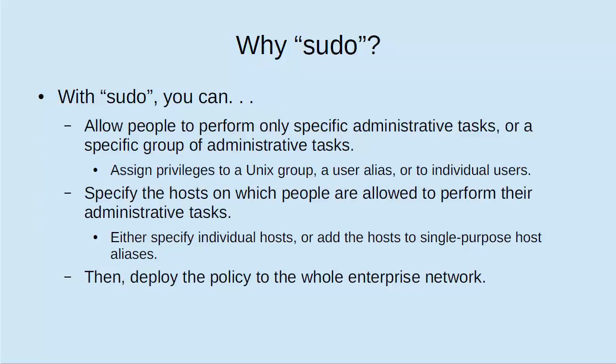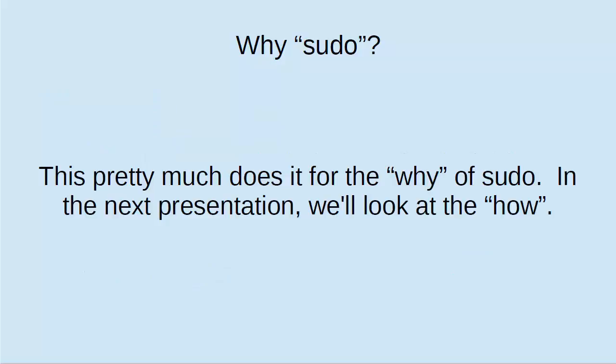Sudo will allow people to perform only specific administrative tasks or a specific group of administrative tasks. You can do this by assigning privileges to a Unix group, to a user alias, or to individual users. We can also specify the hosts on which people are allowed to perform their administrative tasks. This is important when deploying a sudo policy across the entire enterprise — we want something in there to tell sudo that this person is authorized to perform this task on this machine. We can specify that either by specifying individual hosts in the policy or by adding hosts to a single-purpose host alias, such as a host alias for a group of web servers.